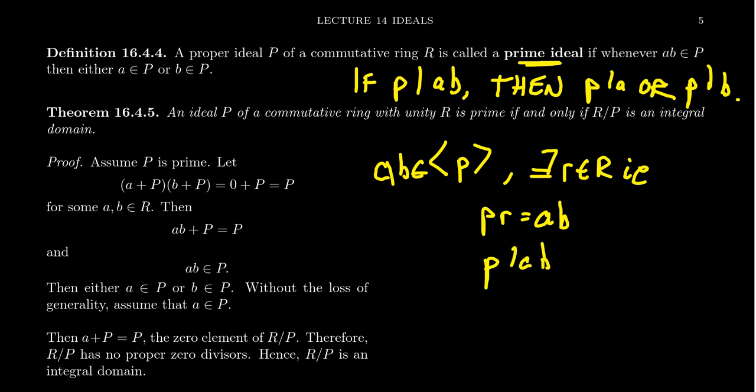So if AB, if a number is inside of someone's principal ideal, then the generator of that principal ideal divides that element. So if AB is in there, you get that. So then if Euclid's lemma applied, if this element P is quote-unquote prime, then that would mean that P divides A or P divides B.